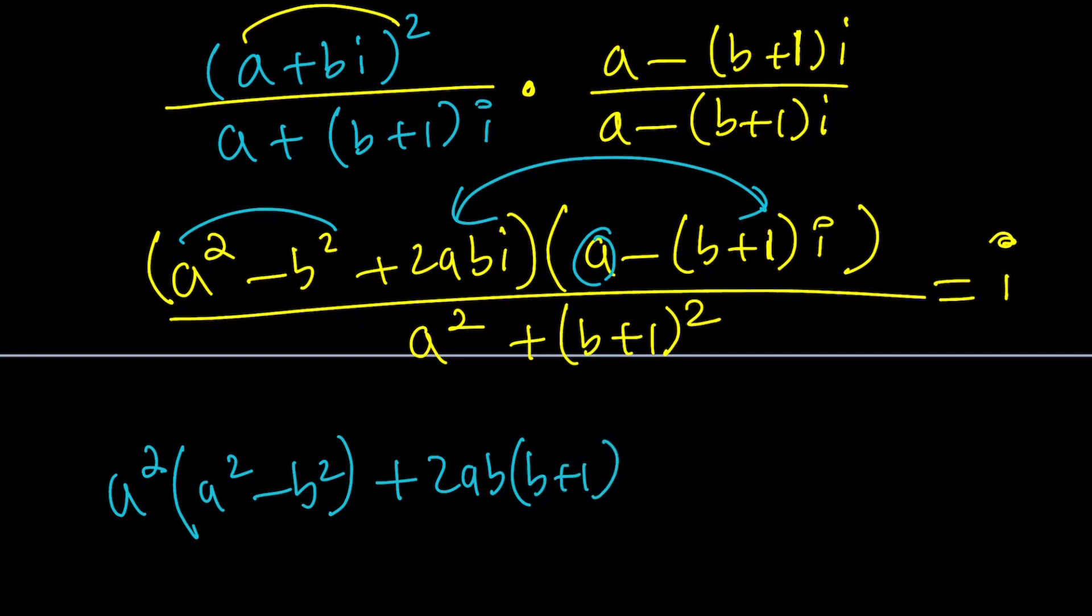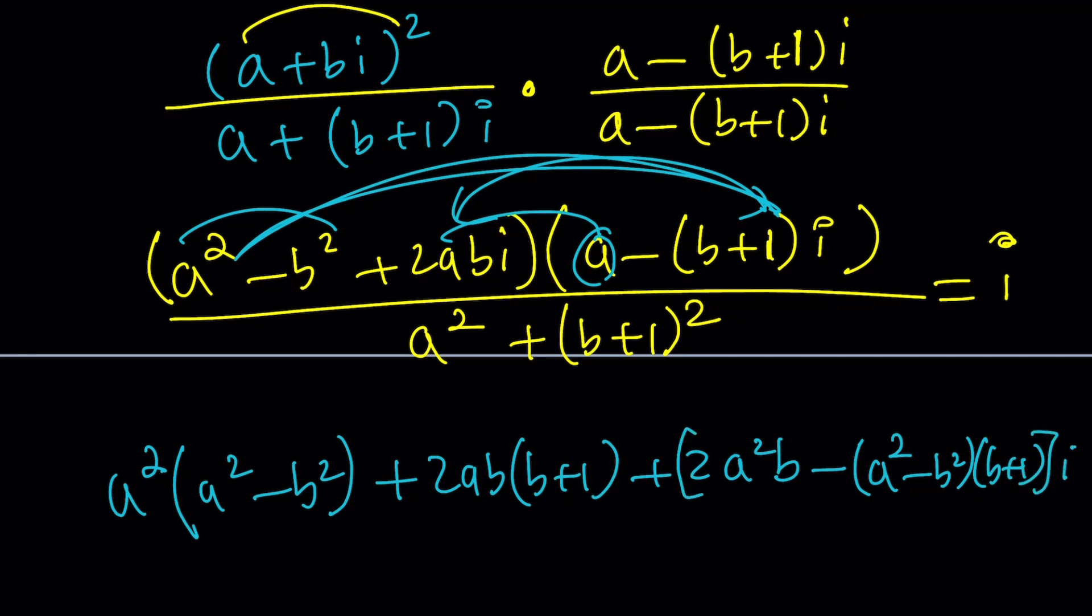Plus 2ab times (b plus 1). And then the imaginary parts are going to be formed by the product of two things. First of which I'll use these two first. 2a squared b and then from that I'm going to subtract these two things with a minus sign. I think it's going to look like this. And then the whole thing is going to be multiplied by i. Make sense?